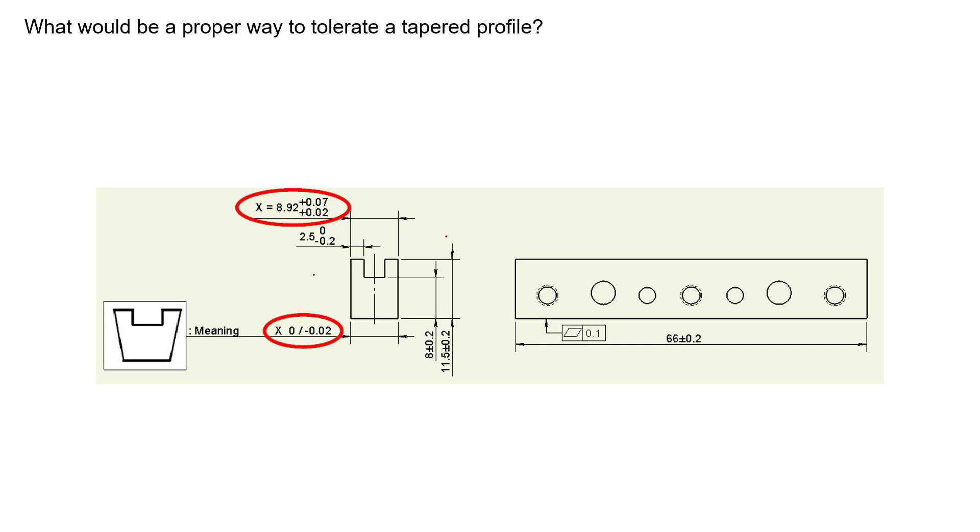This screenshot here is the first attempt at trying to control the taper between these two surfaces. We see a dimension here 8.92 millimeters plus 70 microns plus 20 microns, giving us a size range of 8.94 to 8.99. The intent is to make sure that if we measure at 8.99, we don't taper all the way down to 8.94.